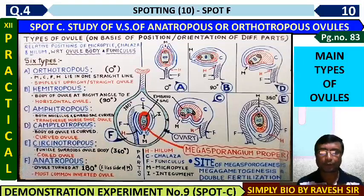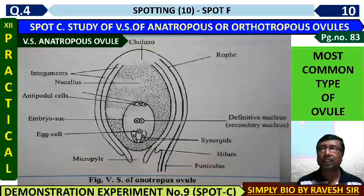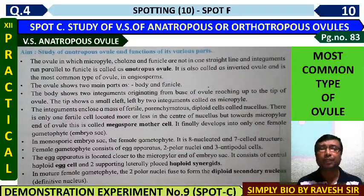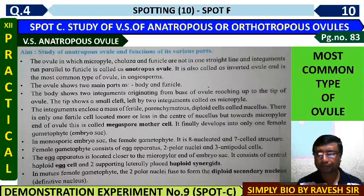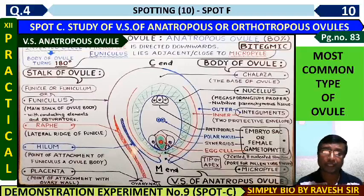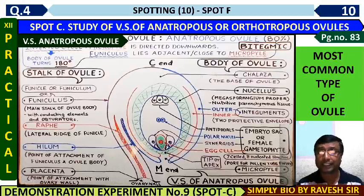During spot F, when you are seated at that spot, you have to identify the ovule and then write its characteristics. On page number 83, the diagram is given along with a description. This description will help you write in the board examination about the anatropos ovule, which is the most common type — about 80 percent of ovules.